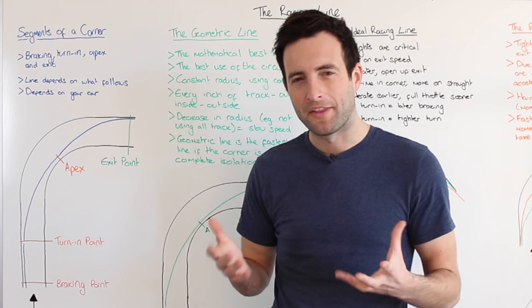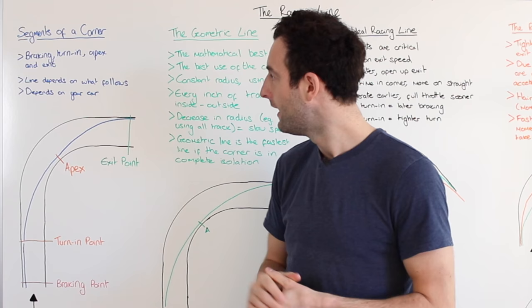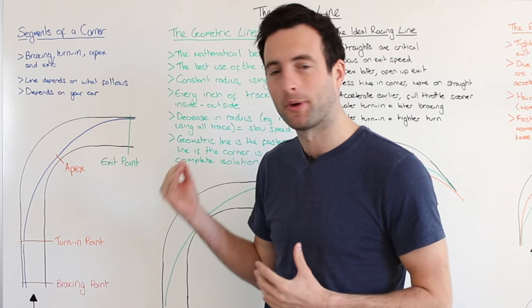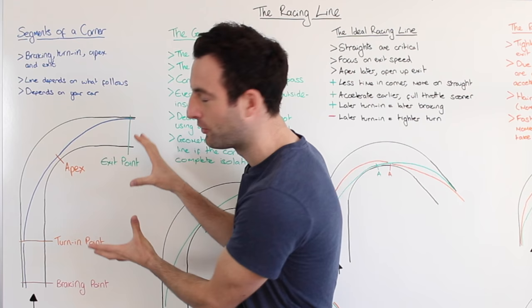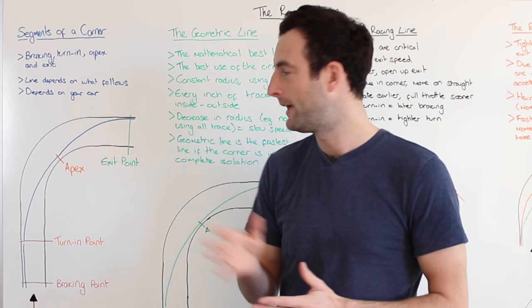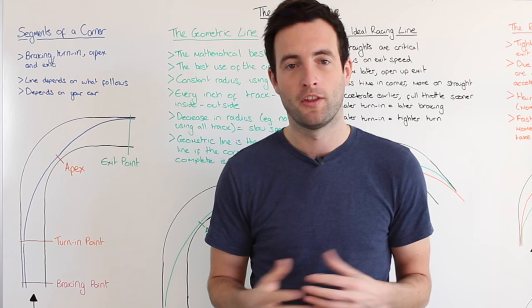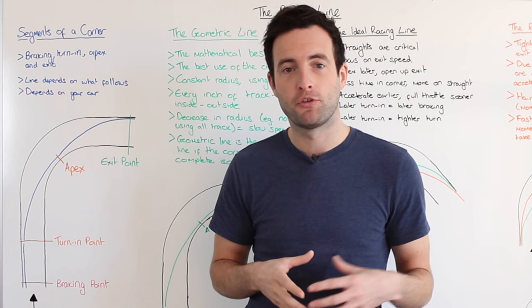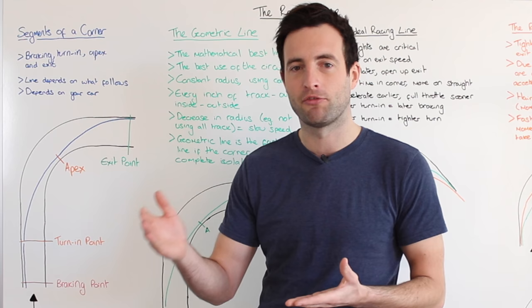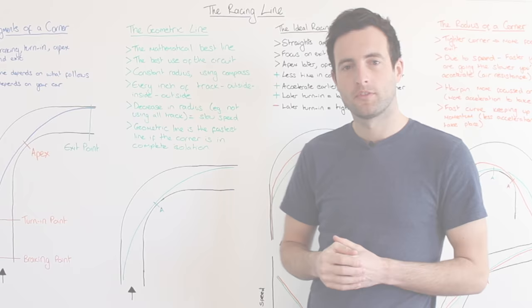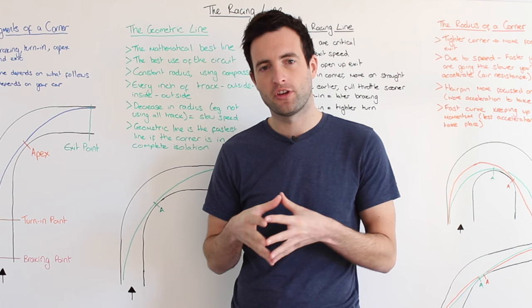Now this is a very simple diagram designed just to show you these specific points of the corner. It's important to remember that your line will not always be this perfect when you're on the circuit, and to be honest this is the line for this corner in isolation. If there's a longer straight after it, or a corner that may turn left or right, your line through that corner will be affected by what follows. It also depends on what kind of car you're driving — if you're in a slow or less powerful car your line will be different to if you're in a very powerful car.